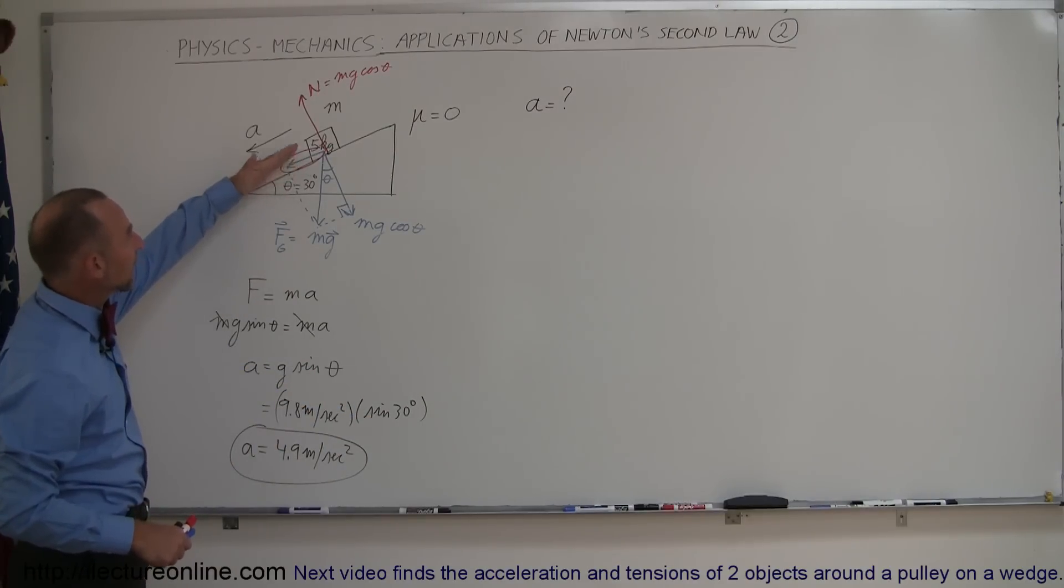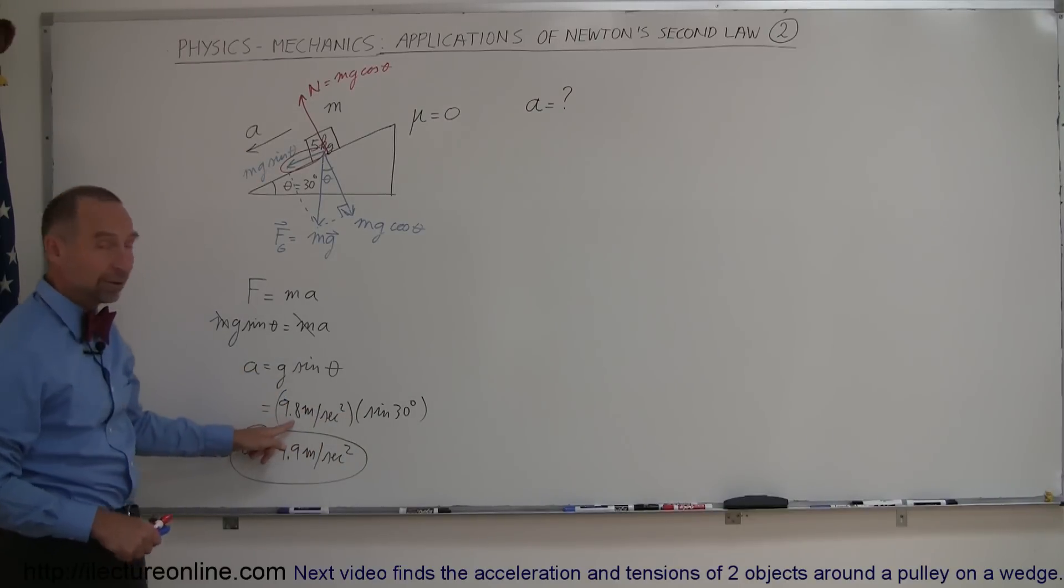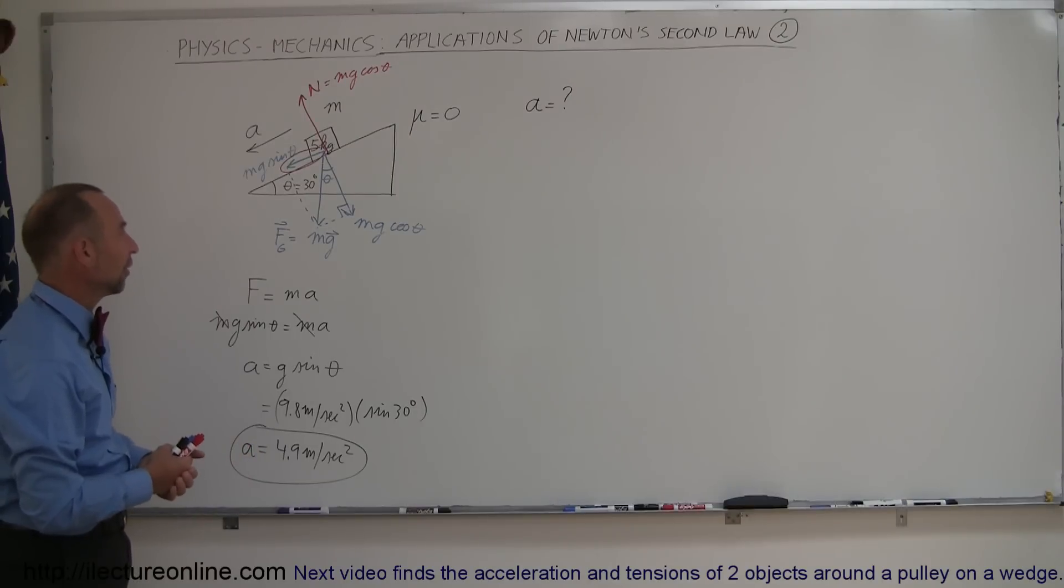What would happen if this angle became 90 degrees? Well, if it became 90 degrees, then it would be like free fall. Now, the sine of 90 degrees is 1, and therefore, this would go to 1, and acceleration would equal 9.8 meters per second squared, which is, of course, acceleration due to free fall. So you can see that when you look at limiting cases, it helps you understand the situation as well.